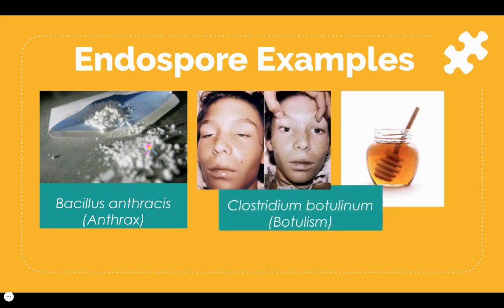The second example is botulism. Botulism is a bacteria that causes paralysis of the muscles because it affects the nervous system. You can see in this image that the boy's facial muscles are very relaxed — that's because botulism paralyzes the face.